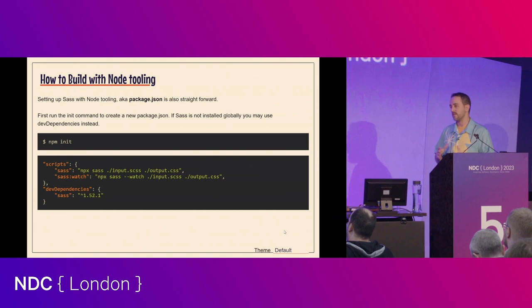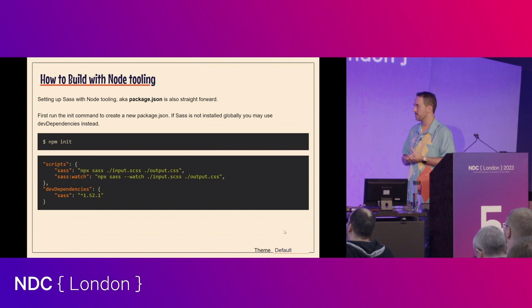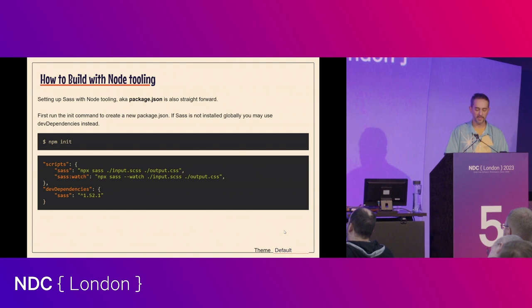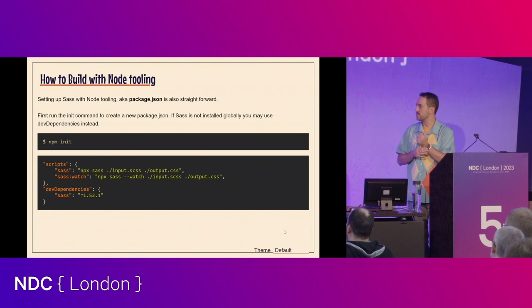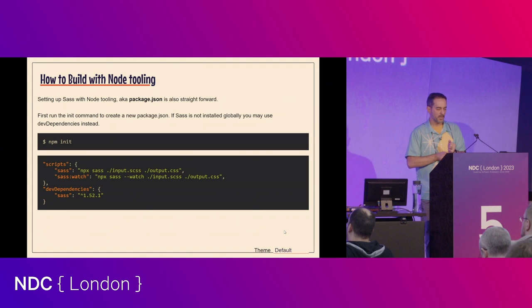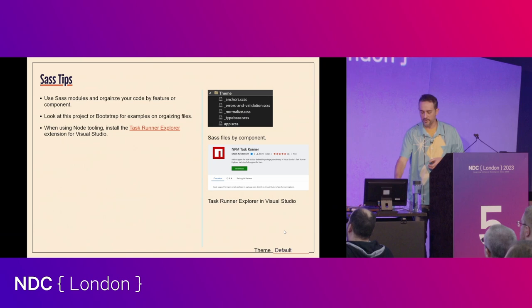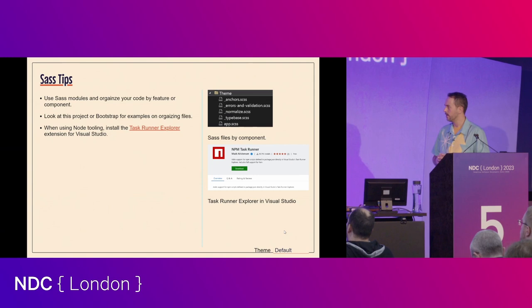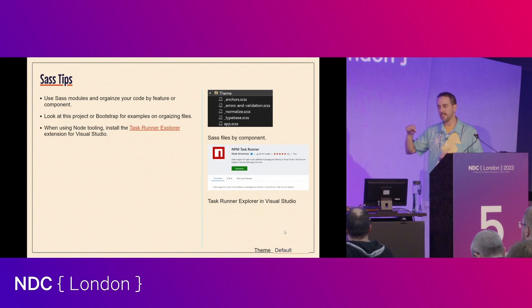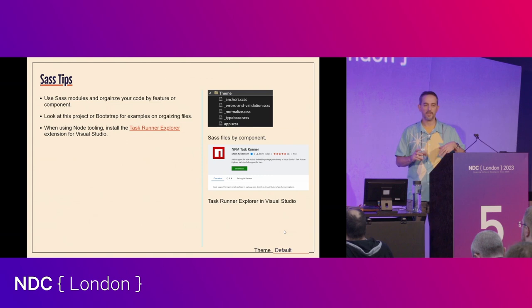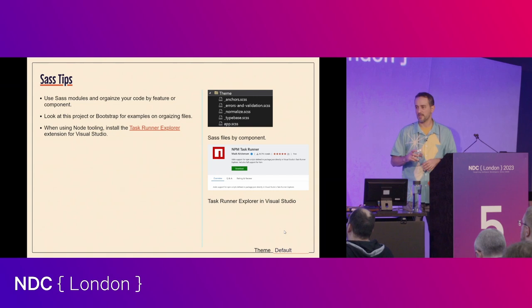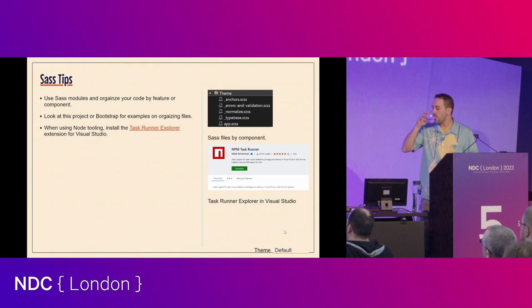You can still use Node tooling if you'd like to. If you already have some other Node technologies in your project — maybe legacy JavaScript you're interoperating with — it is possible. You'll get faster compilation times using the Dart Sass version of the compiler, but you can run that command through NPM or opt into the JavaScript version. If you are using NPM tools, there's handy stuff for Visual Studio: Mads Christensen has a great plugin called NPM Task Runner. It inspects your package.json file and gives you a GUI in Visual Studio to click individual scripts and run them without bouncing out to the command line.